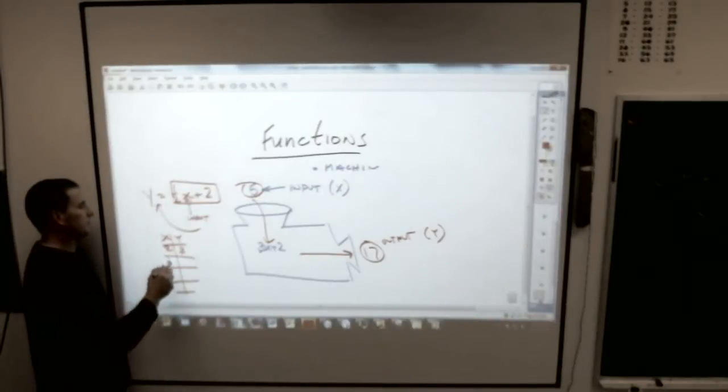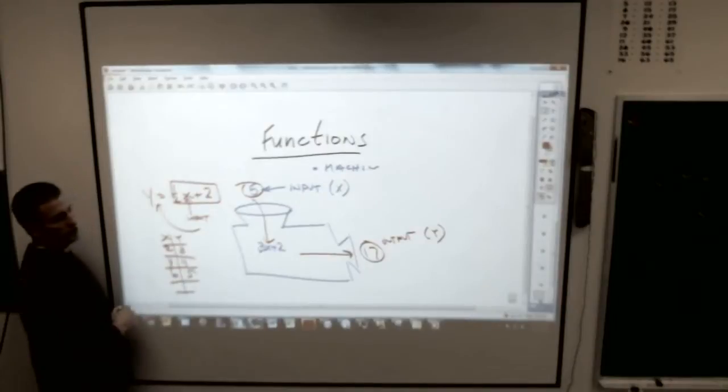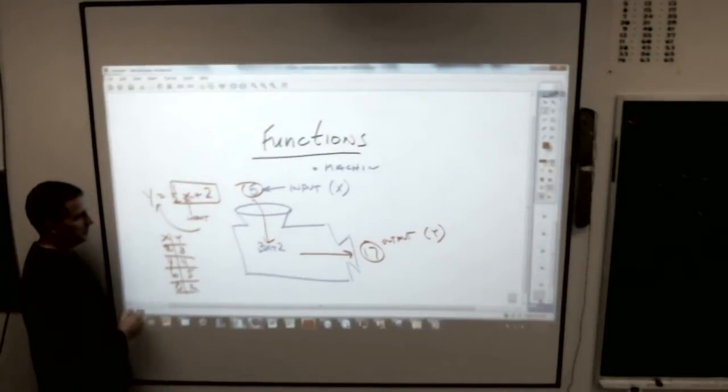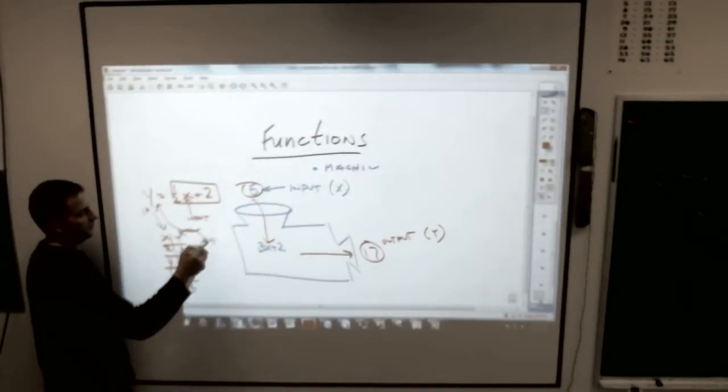Maybe I want to pick 4. Half of 4 is 2, 2 plus 2 is 4. Maybe I want to pick 6. Half of 6 is 3, 3 plus 2 is 5. Usually you always want to pick 0, because there's nothing easier than 0. 0 times anything is 0, but plus 2 gives you plus 2. These are the input numbers and these are the output numbers.